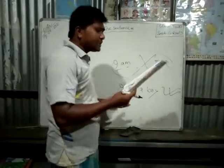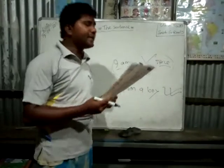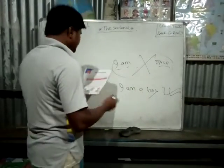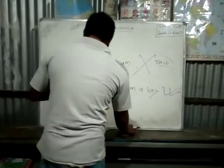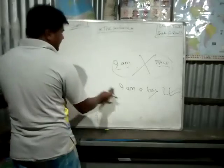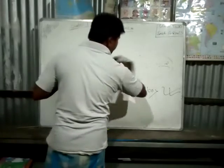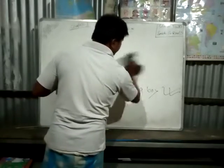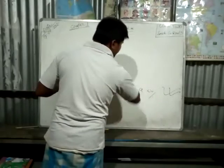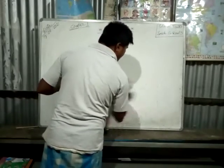Every sentence must begin with a capital letter. So for any sentence when you write first — I have written capital 'I' here. Any sentence, when you write the first word, it should begin with a capital letter.